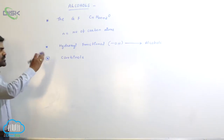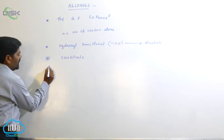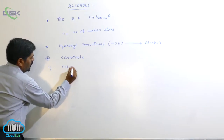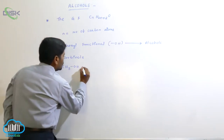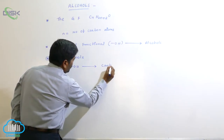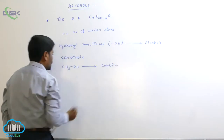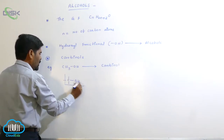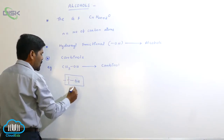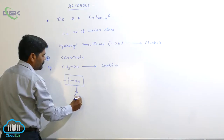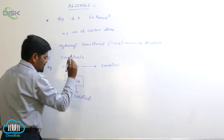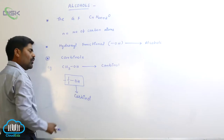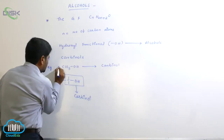Alcohols are also called carbinols. For example, methyl alcohol is commonly known as carbinol. This particular skeleton or system is known as carbinol.